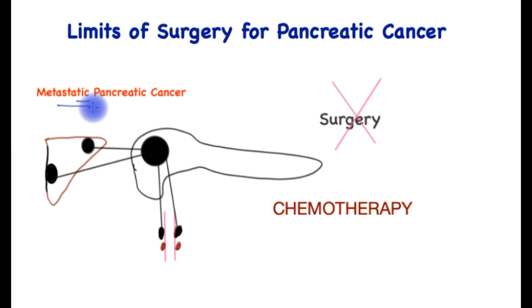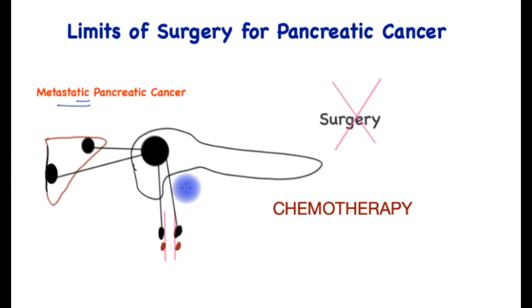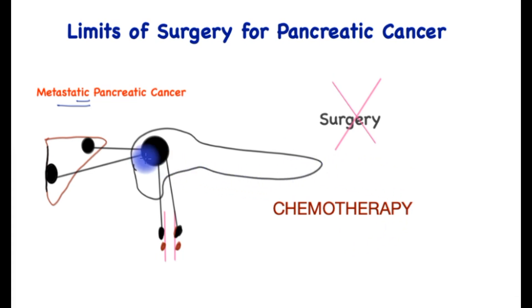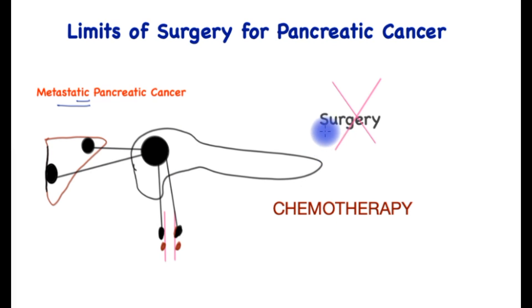What about metastatic pancreatic cancer — cancer that has spread outside of the pancreas, for instance to the liver, lymph nodes around the aorta, the lungs, bones, or within the abdomen? Surgery unfortunately is not an option, and patients are treated with palliative intent with chemotherapy. This is still the case even if both the primary cancer and the metastasis could technically be removed with surgery, because experience has shown that even aggressive surgery does not change the course of the disease but adds to the morbidity of the patients.